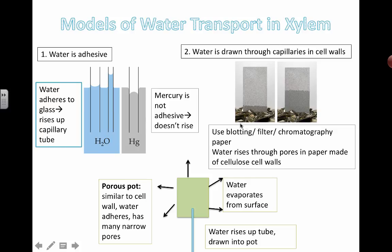The second model is simple chromatography, which you've done or will do. If you take paper and put it into some liquid — they use this a lot in photosynthesis — the paper will start to get wet. Even though you didn't drop the entire paper in, the water actually starts moving up. Paper is made from plant material, and the water rises through the pores in the paper made of cellulose cell walls. This is capillary action happening through the actual cell walls in blotting, filter, or chromatography paper.